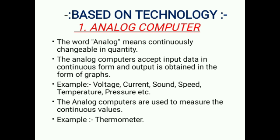Now let us discuss about based on technology or based on mechanism. The first one is analog computer. The word analog means continuously changeable in quantity. The analog computer accepts input data in continuous form and output is obtained in the form of graphs. Examples include voltage, current, sound, speed, temperature, pressure, etc. Analog computers are used to measure continuous values; for example, a thermometer.